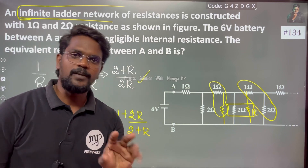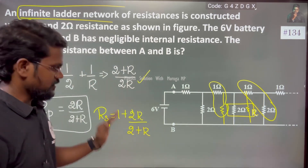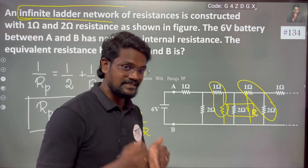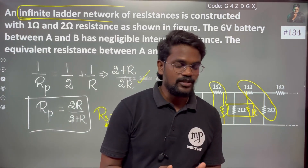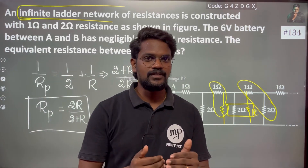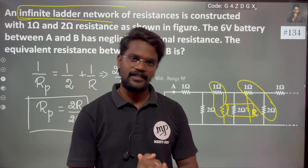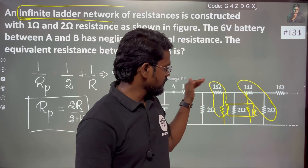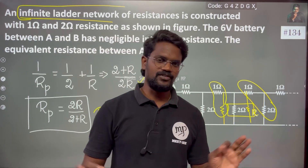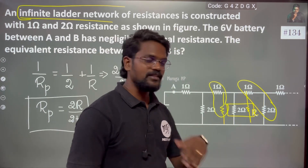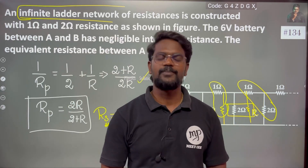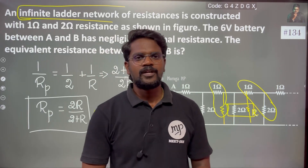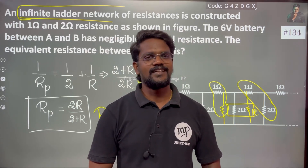So the effective resistance is 2 ohms. If you apply this to a resistance network in one branch, you can follow this method only when the resistors are identical throughout. If the resistors are different, you cannot use this self-similarity method because the effective resistance in each branch would be different.